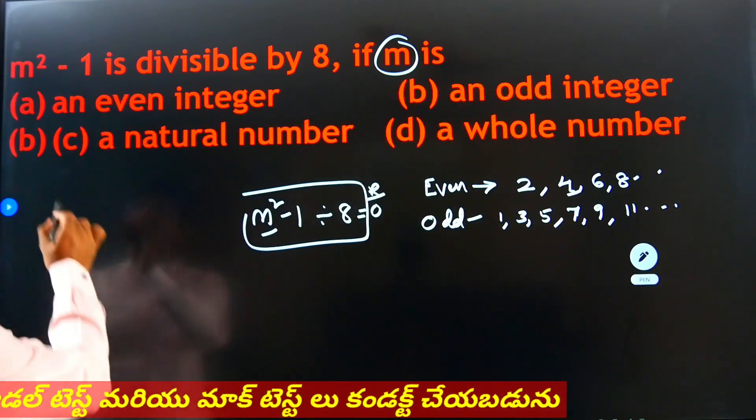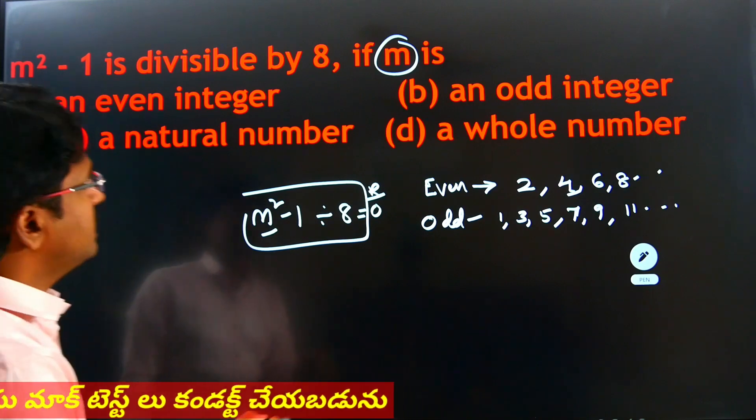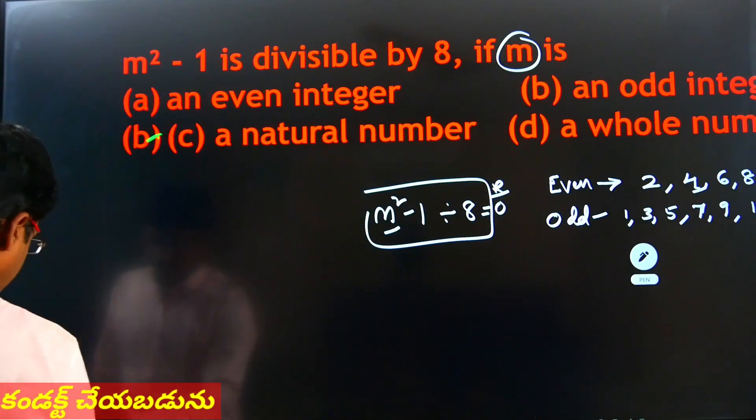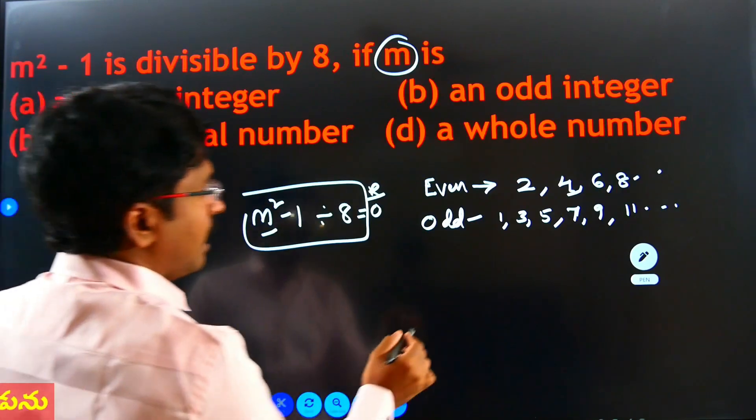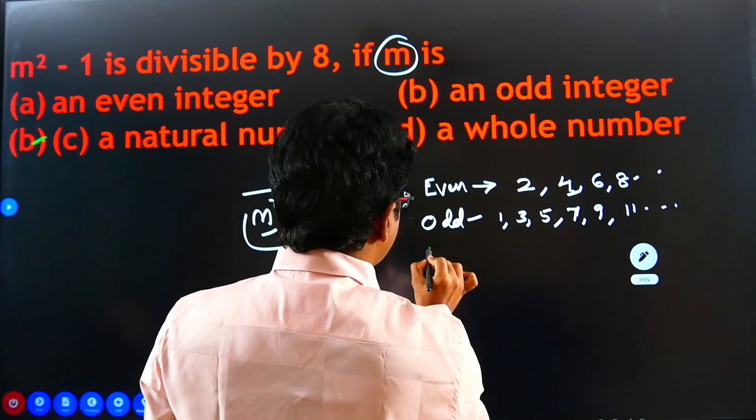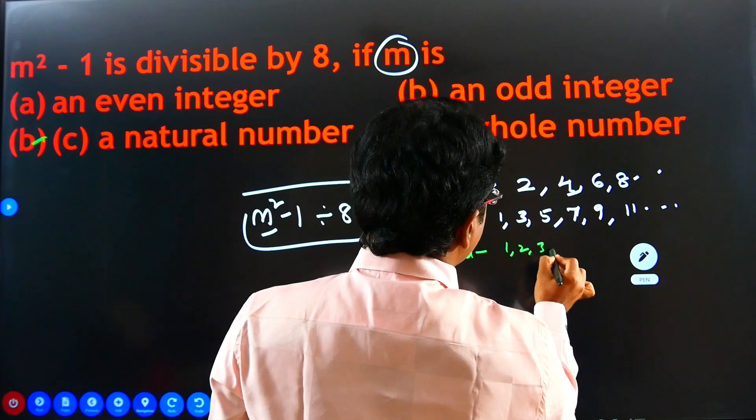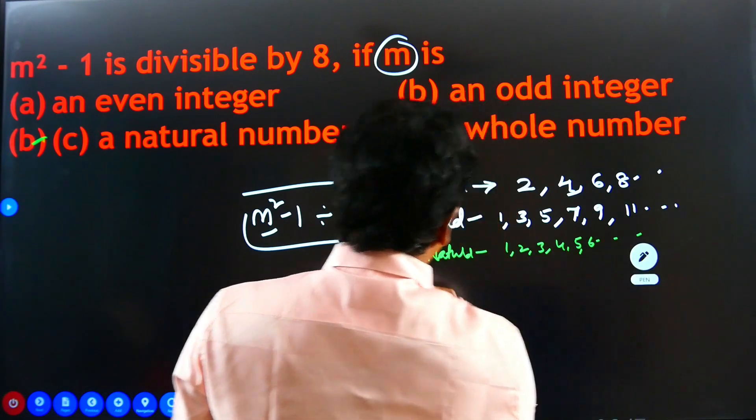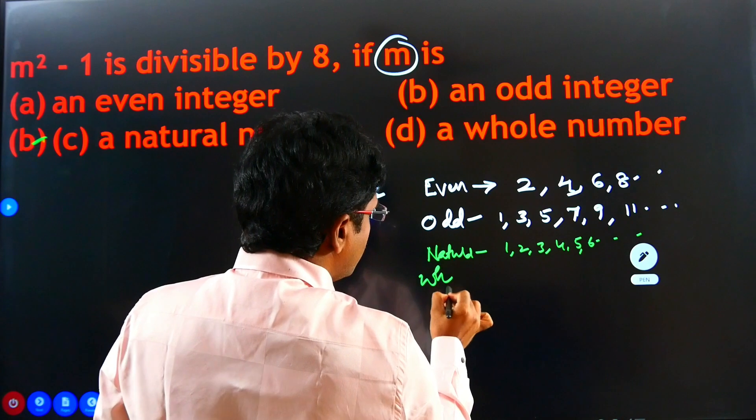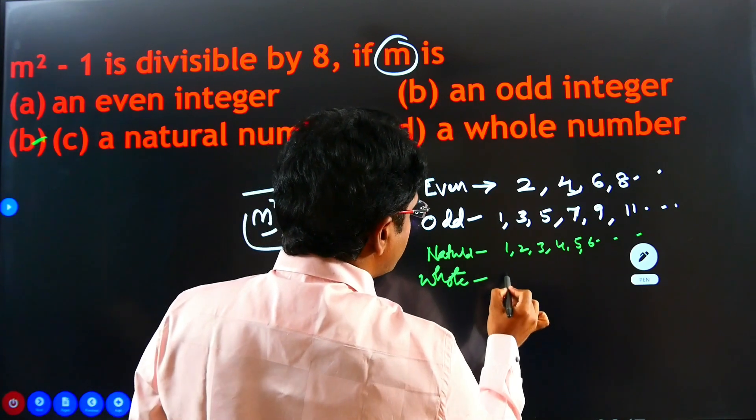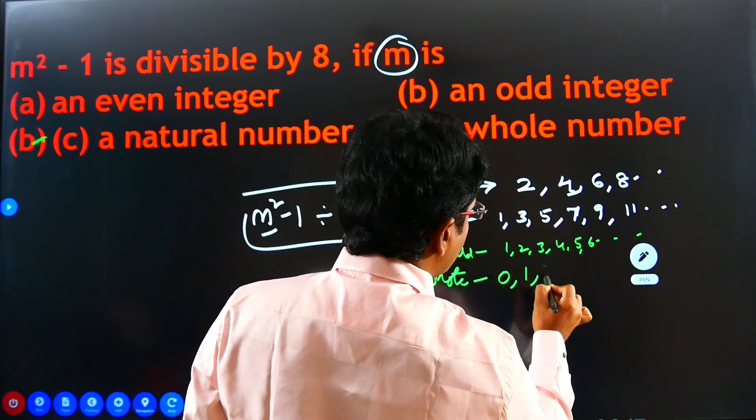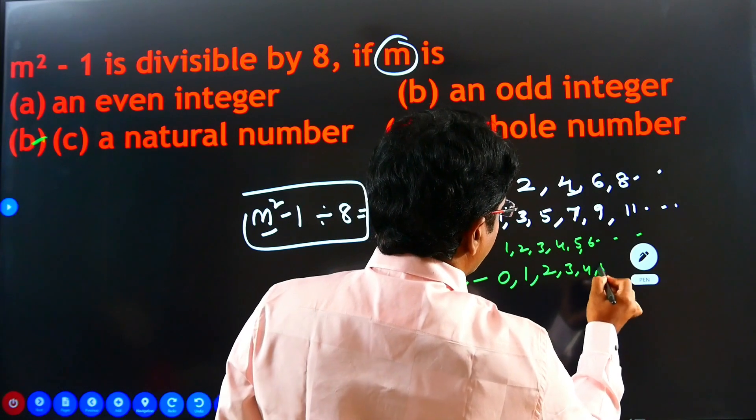Next, option C is natural numbers. Natural numbers means 1, 2, 3, 4, 5, 6, like this. And you know that whole numbers. Whole numbers are 0 to start. 0, 1, 2, 3, 4, 5.